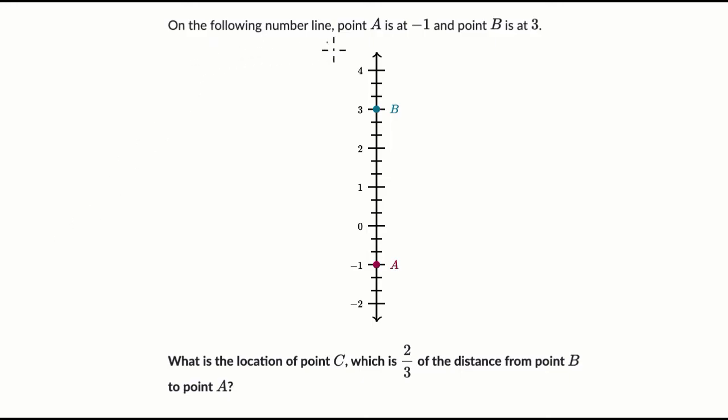We're told on the following number line, point A is at negative one, we can see that there, and point B is at three. What is the location of point C, which is two-thirds of the distance from point B to point A?